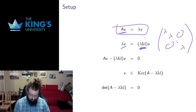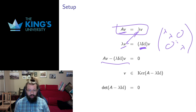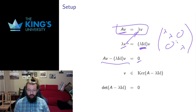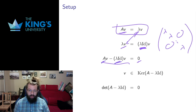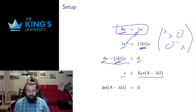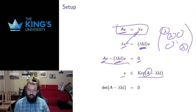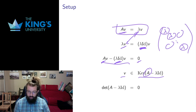So Av equals lambda times v, and I can take those over to one side of the equation: the action of A on v minus the action of lambda identity on v gives me the zero vector. That means the action of A minus lambda identity sends v to zero, so v needs to be in the kernel of A minus lambda identity — the matrix A with lambda subtracted from each of the diagonal entries.